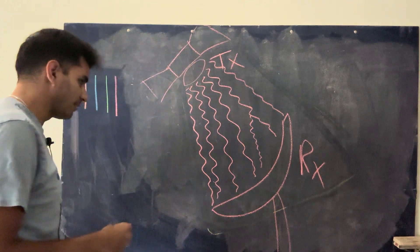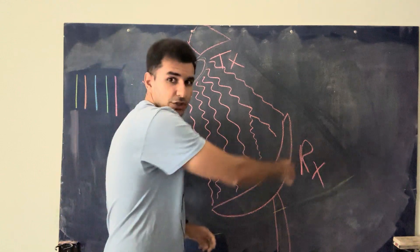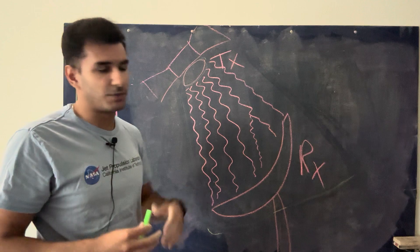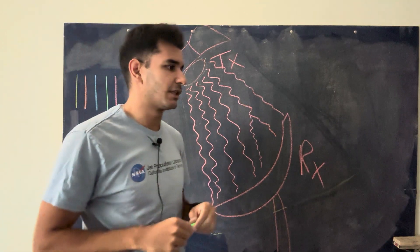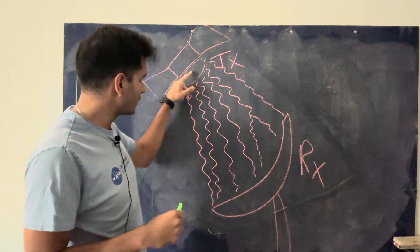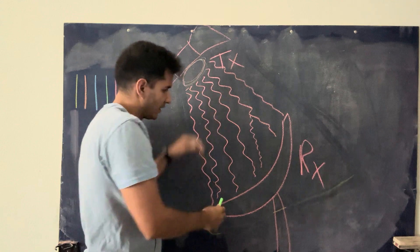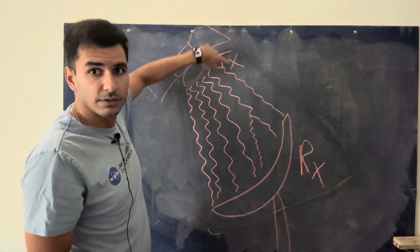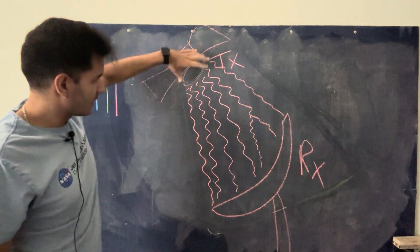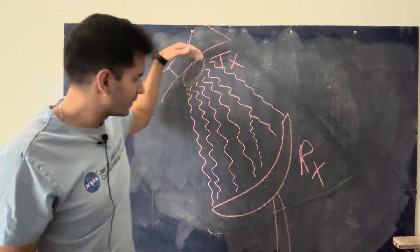I'm going to start by explaining this diagram I have over here: a satellite talking to a ground station. You've probably seen these kinds of dish antenna ground stations — they're used for TV and a lot of different services. What we have is a satellite, and these are electromagnetic waves being transmitted. This is called TX, which stands for transmitter. This is RX, which is receiver. The satellite is trying to talk to the ground station antenna and sending these waves.